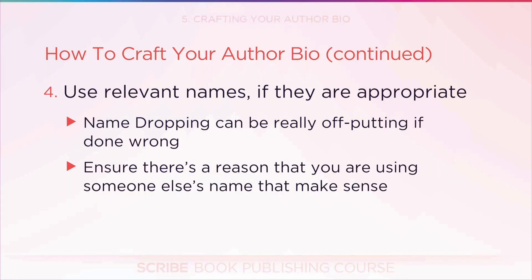Number four: use relevant names if they're appropriate without name dropping. Name dropping can be really off-putting if done wrong, but there's a right way to do it. For example, if you're relatively unknown, you can say something like 'the woman who Seth Godin called the most important writer of our time' — this way you're trading on Seth Godin's reputation and establishing your credentials, assuming he actually said this. The wrong way would be saying something like 'in the best-selling tradition of Seth Godin, Gary Vaynerchuk, and Tim Ferriss,' or 'the Seth Godin of his generation.' However, if you've worked for or with very well-known people, name-dropping is not seen as bad — it signals your importance and ability. What matters is that there is a legitimate reason for using someone else's name.